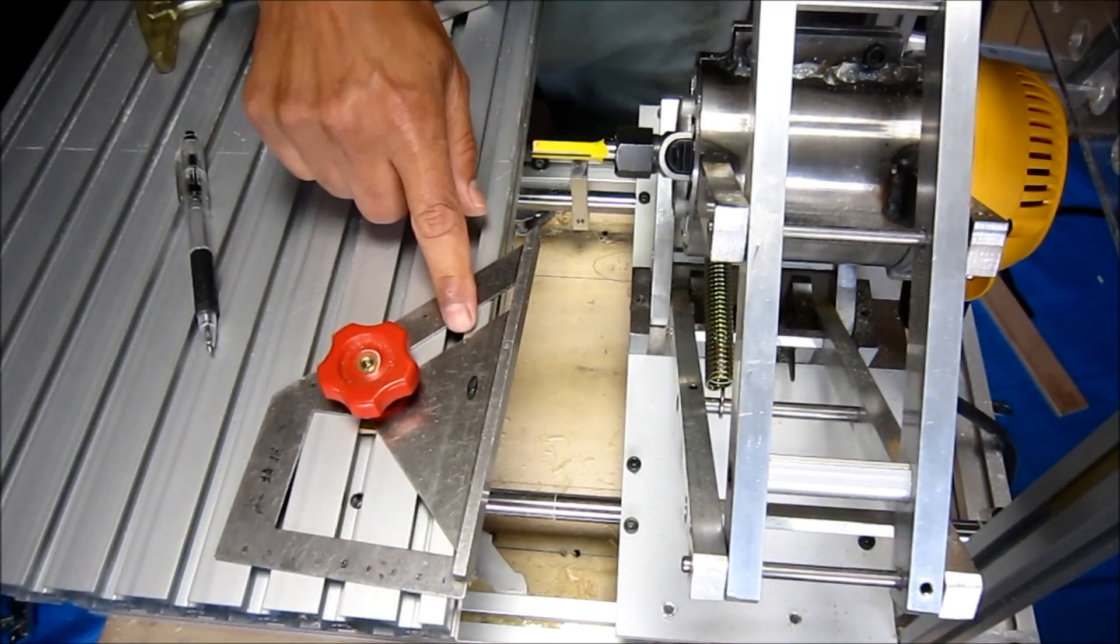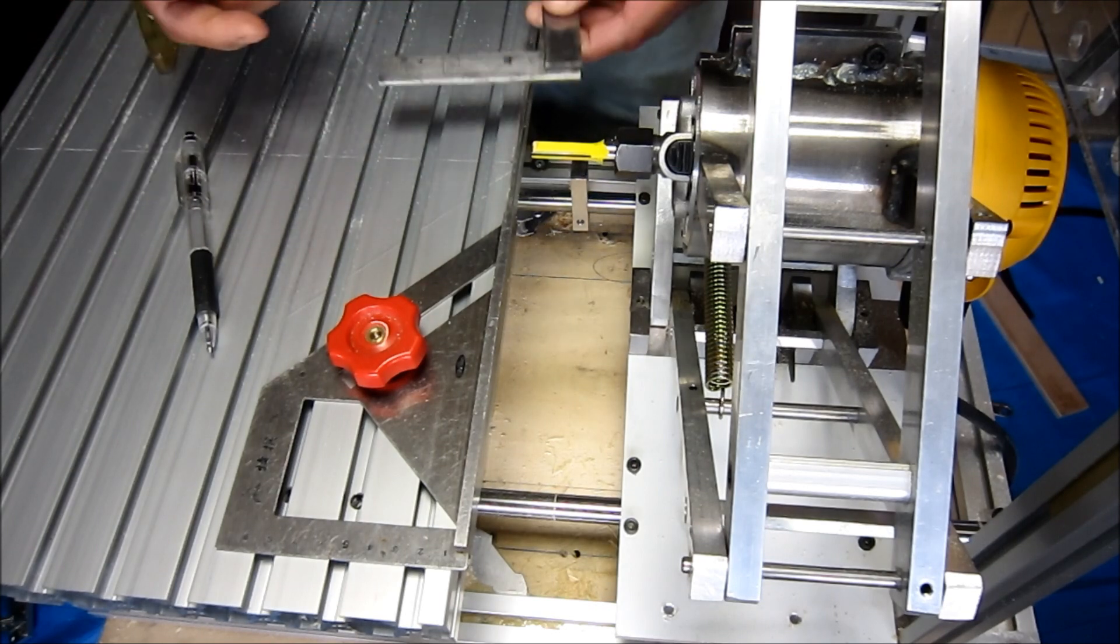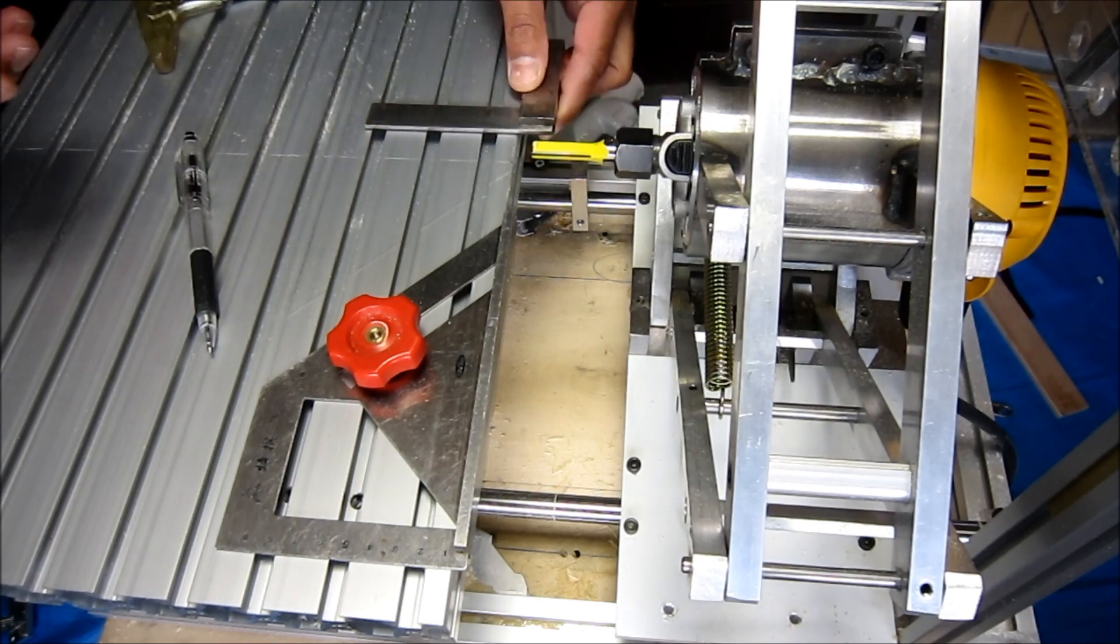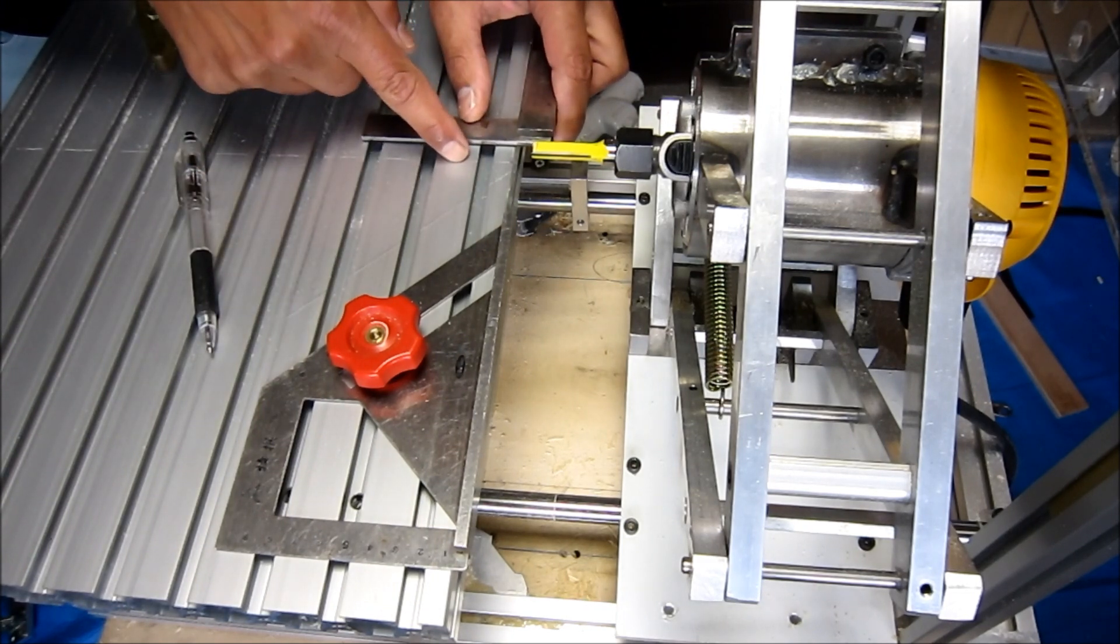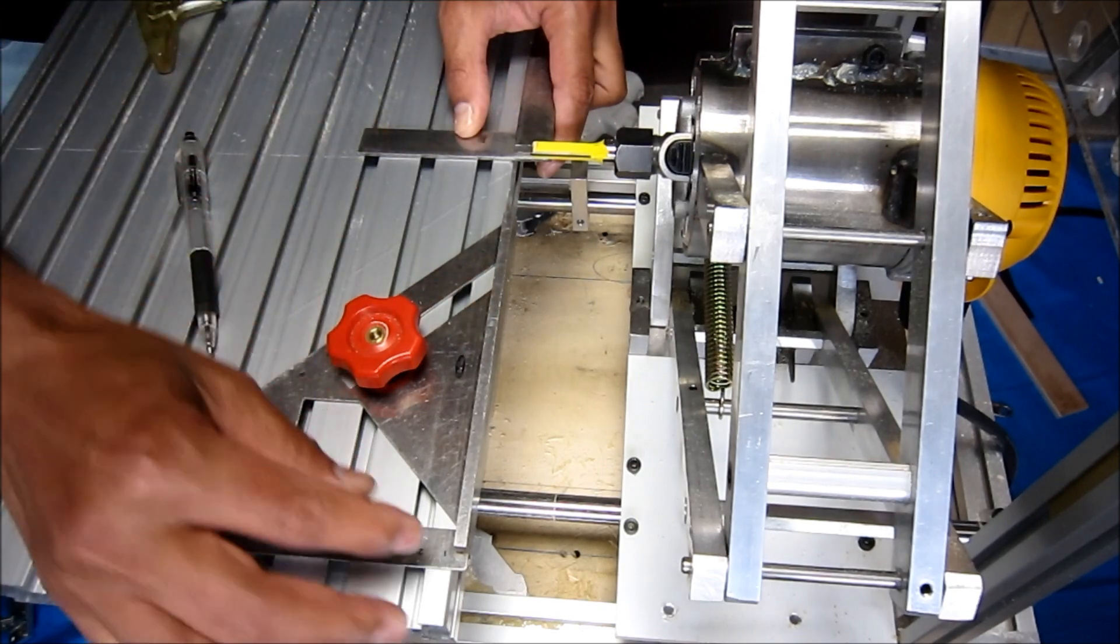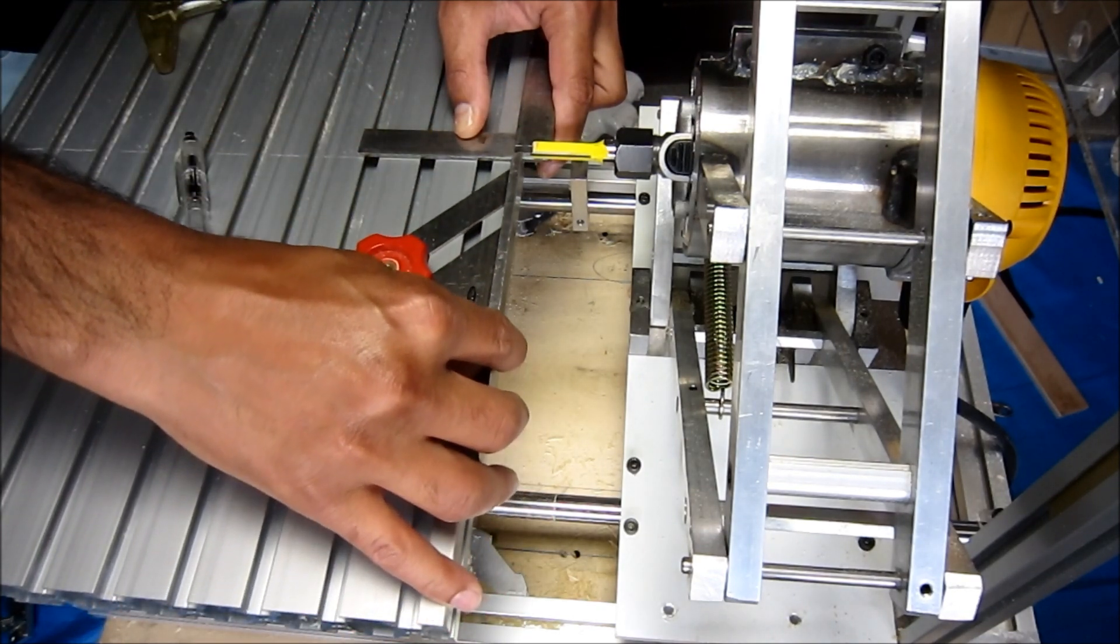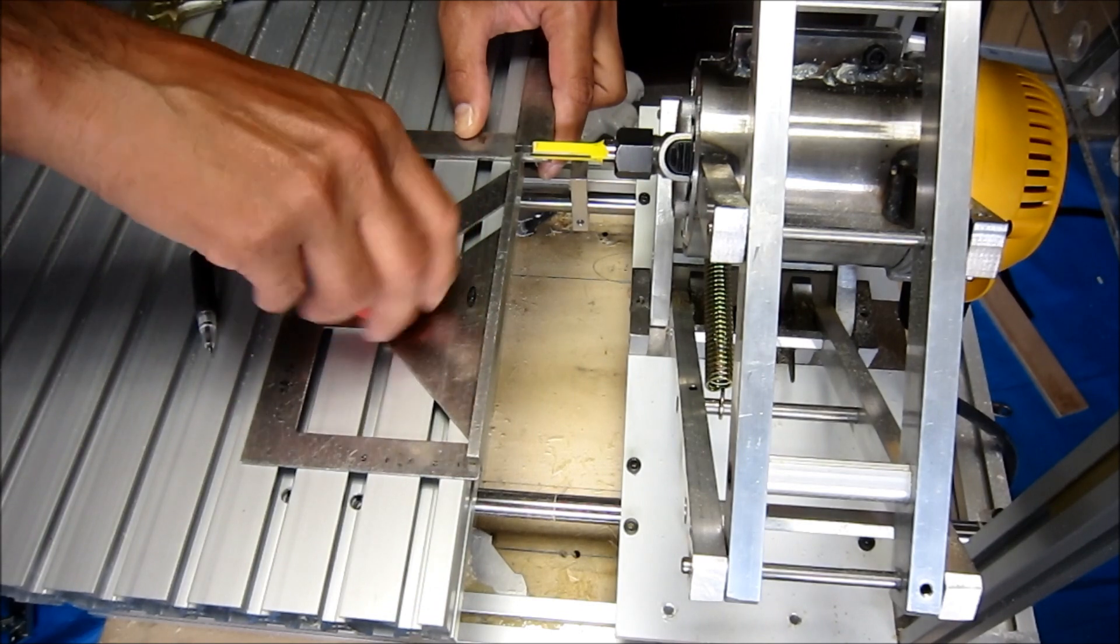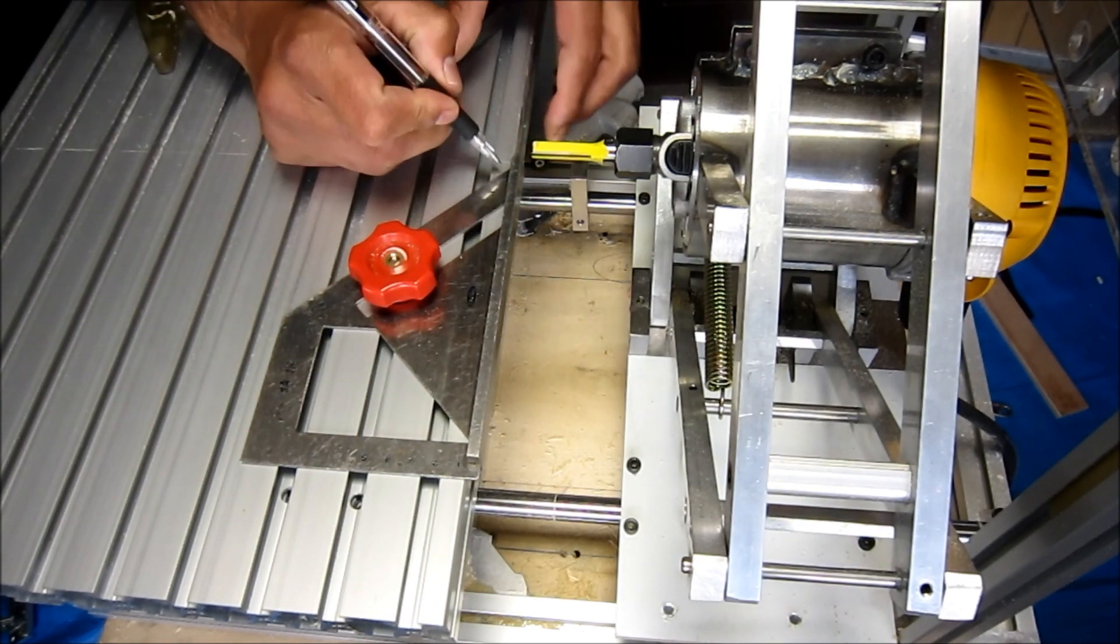So let's start. We need this kind of mitre square and this 90-degree angle square. What we have to do, here is a line of my table center which determines the mechanism center. Bring this line to here and then this shoulder to here and then simply lock it, and then make a mark line here.